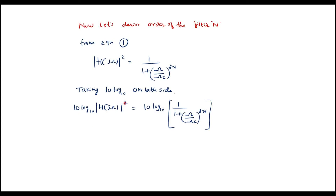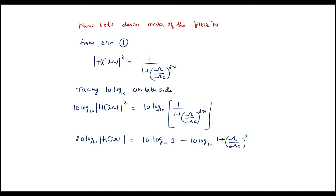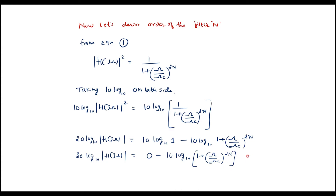Simplifying using logarithmic rules, 20·log₁₀|H(jω)| = 10·log₁₀(1) − 10·log₁₀(1 + (ω/ωc)^(2n)). Since log(1) = 0, this becomes: 20·log₁₀|H(jω)| = −10·log₁₀(1 + (ω/ωc)^(2n)). We call this equation 1 (simplified).